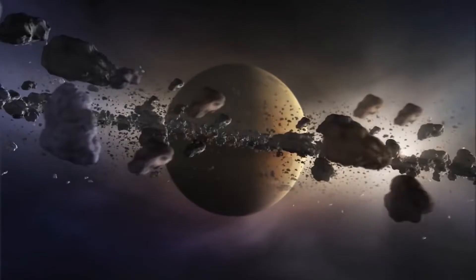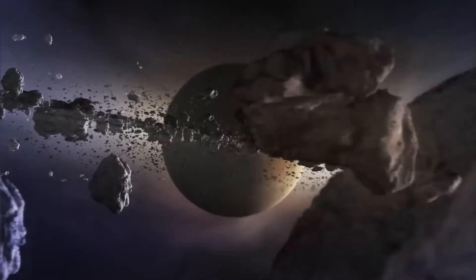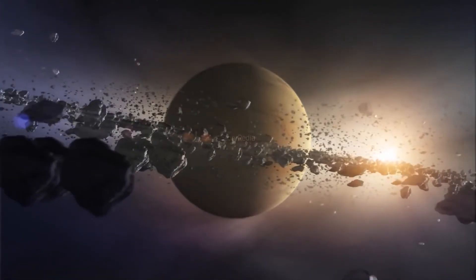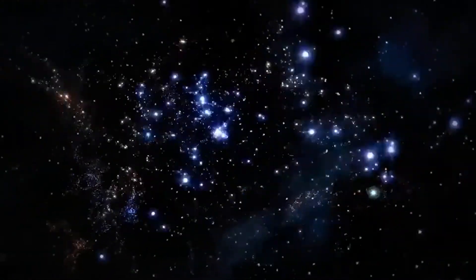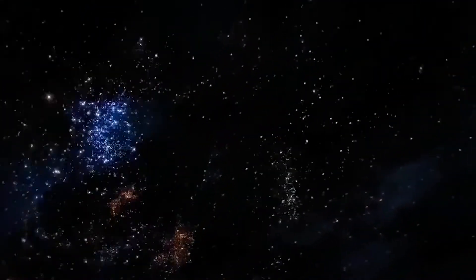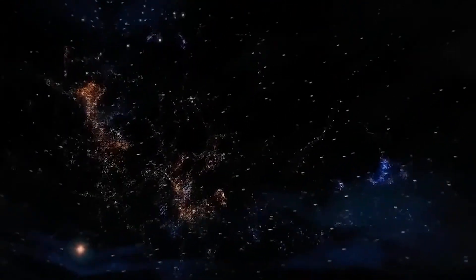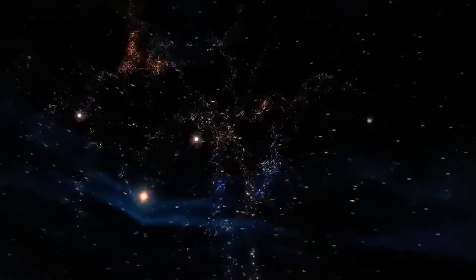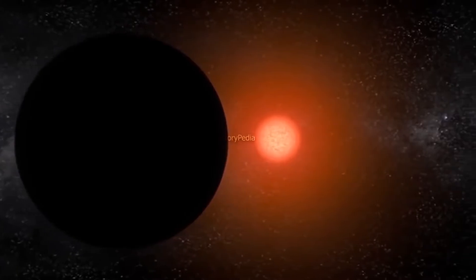Kepler-452b has a better-than-even chance of being rocky because it is 1.6 times the size of Earth. Located 1,400 light-years away from Earth, Kepler-452b orbits its star in just 20 days more time than Earth does.